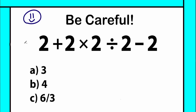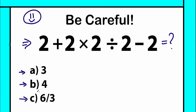Here in the middle of the screen we have a really interesting math question: 2 plus 2 times 2 divided by 2 minus 2. So what is the correct answer? We have three options, and right now we can guess what the correct answer is — A, B, or C — write your solution down in the comment section, and in a few minutes we will check our answer.